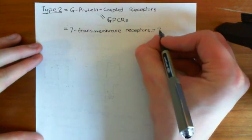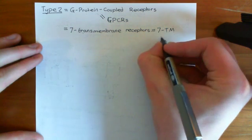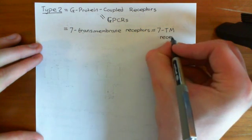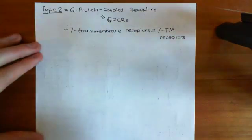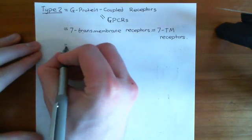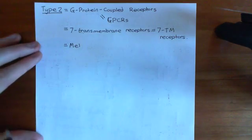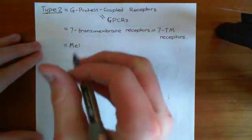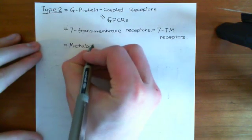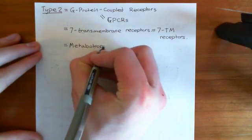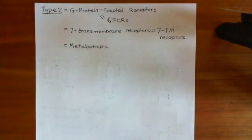Seven transmembrane receptors can be abbreviated to seven TM receptors. There is also one other name used for G-protein-coupled receptors, generally by neuroscientists — the same people who use ionotropic also use this word — and they call them metabotropic receptors. You wouldn't catch a pharmacologist using that term.